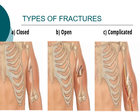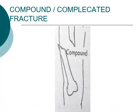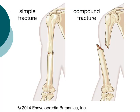These are examples of a complicated fracture. In the last picture you will see that the bone is not only broken but has also injured the blood vessels and the nerves. The complicated fracture can also be called a compound fracture, where other vessels and tissues of the body are also involved.